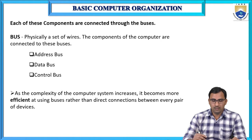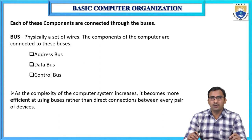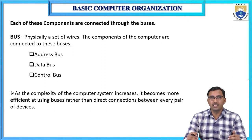Coming to the buses. We have seen the different subsystems or components of a basic computer. All these subsystems are interconnected using buses. A bus is physically a set of wires. Using these buses, all these different subsystems are connected together so that they can communicate with each other.